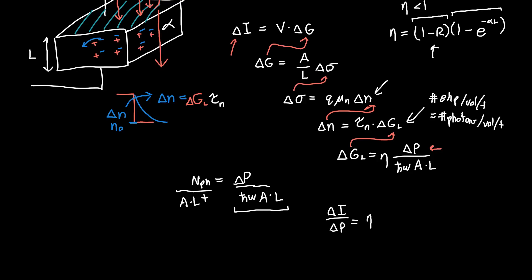...the transfer function delta I over delta P is just equal to our efficiency factor times Q over h-bar omega times, and this is a little awkward, mu_n times our voltage divided by L squared times tau_n.